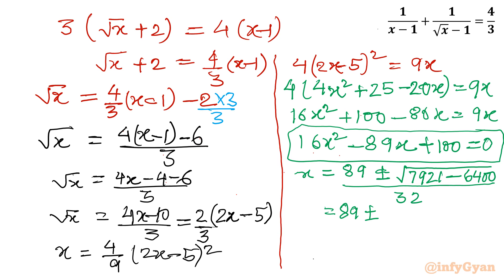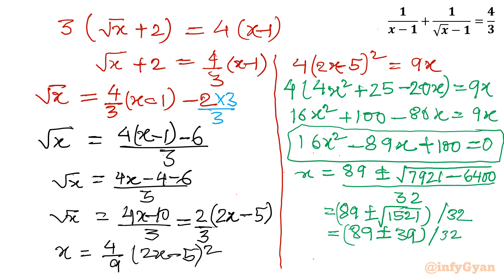The square root of 1521 is 39. So x equals (89 plus or minus 39) over 32. Taking the plus sign: (89 plus 39) over 32 equals 128 over 32, which is 4. Taking the minus sign: (89 minus 39) over 32 equals 50 over 32, which simplifies to 25 over 16.